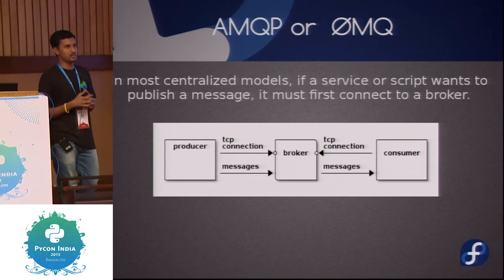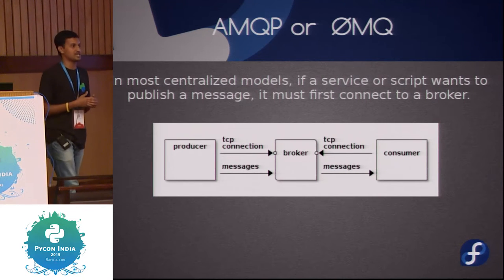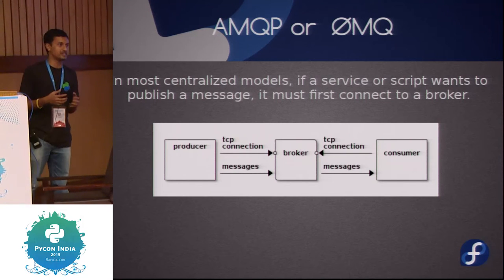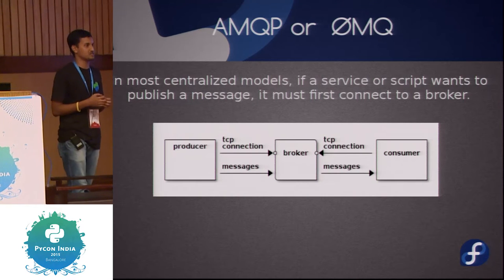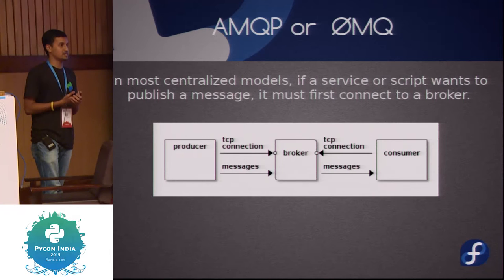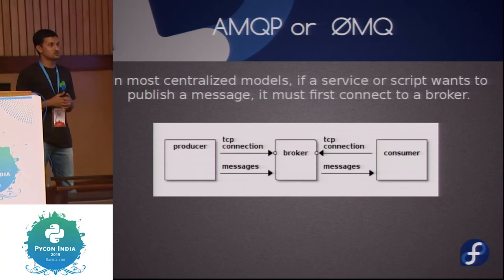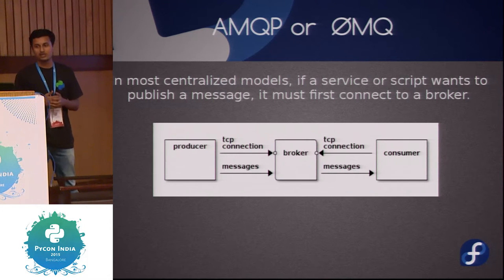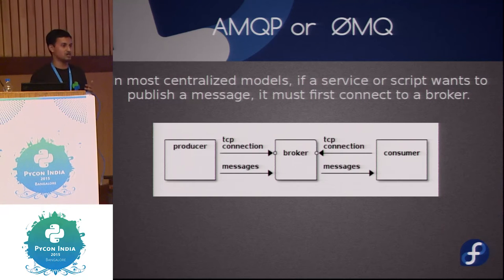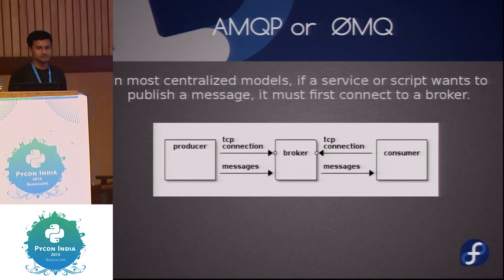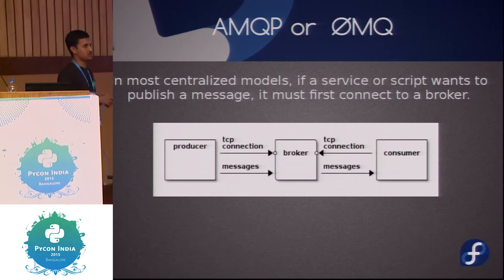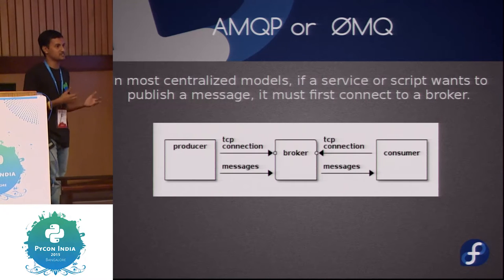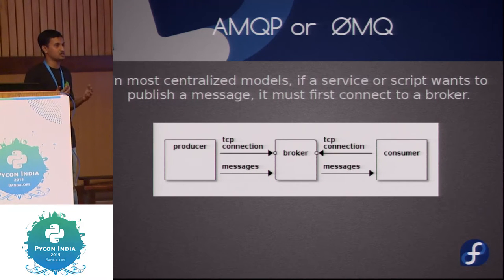FedMessage has very critical changes happening constantly — suppose a build is happening, a new package has been updated, so an RPM is created. Package maintainers get notifications and others subscribed to that list get notified too. If a message doesn't get transferred, it would be a problem for package maintainers. In the traditional AMQP structure, there is a producer, a central broker, and a consumer. If the broker goes down, the messages the producer is sending are lost — a lot of things get disconnected and fall out of place.